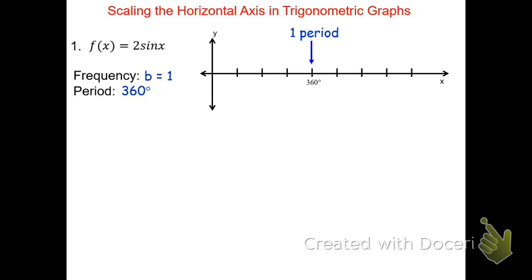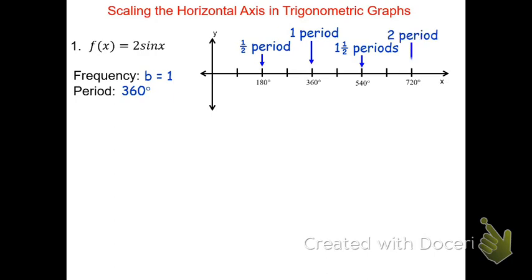The half period would be half of that full period. Half of 360 degrees is 180 degrees, which represents one half of the period. Counting up now by 180 degrees for every other mark: 180 plus 180 is 360, 360 plus 180 is 540 degrees. That's going to be a cycle and a half. And then 540 degrees plus another 180 degrees is 720 degrees, which represents two complete periods.